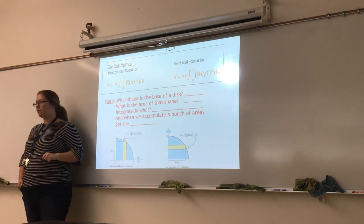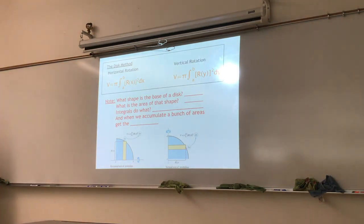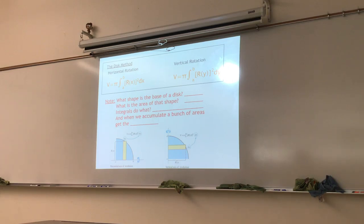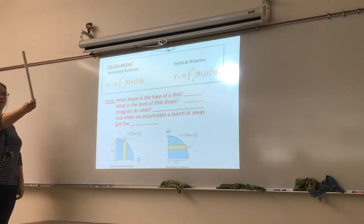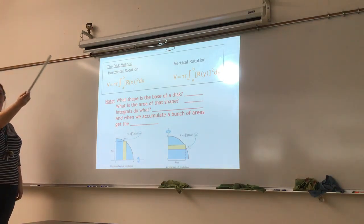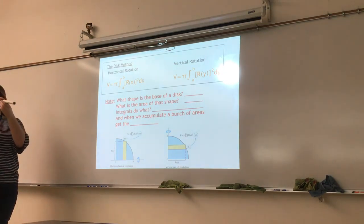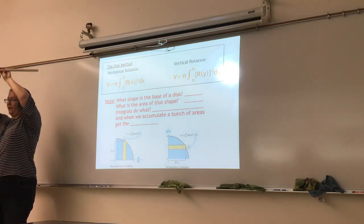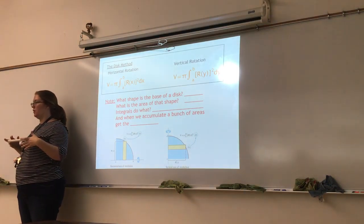We can have two types of rotation: horizontal rotation or vertical rotation. If I take this and spin it around horizontally, I can do that. Or if I'm doing my curve and I bound it with a y-axis, then I could spin it around the y-axis. You will get a different shape depending on what axis you spin around. You will not get the same volume if you spin around different axes.